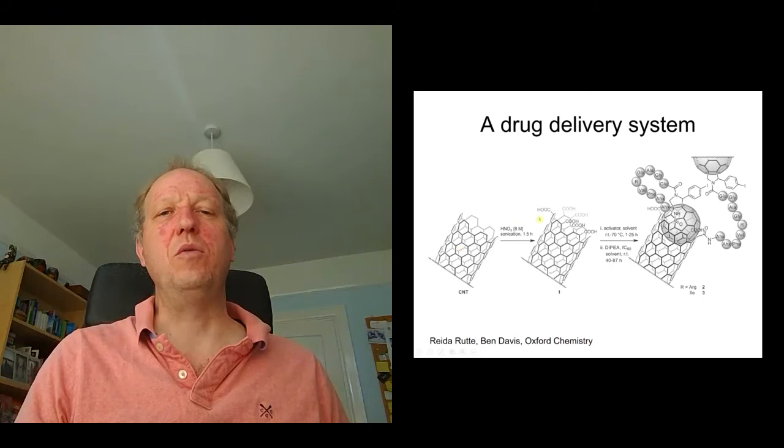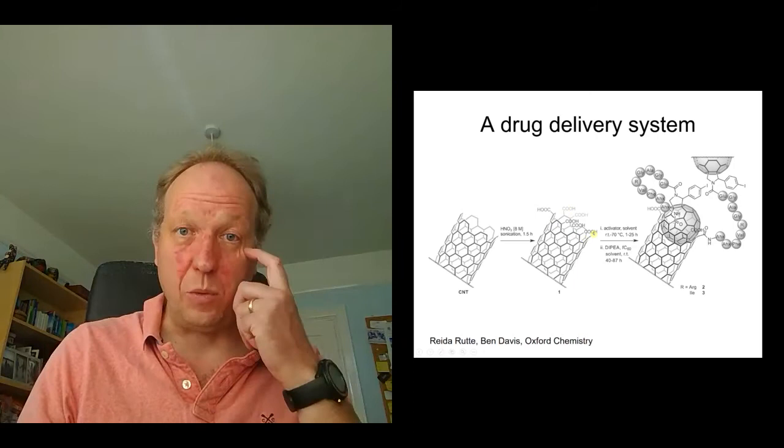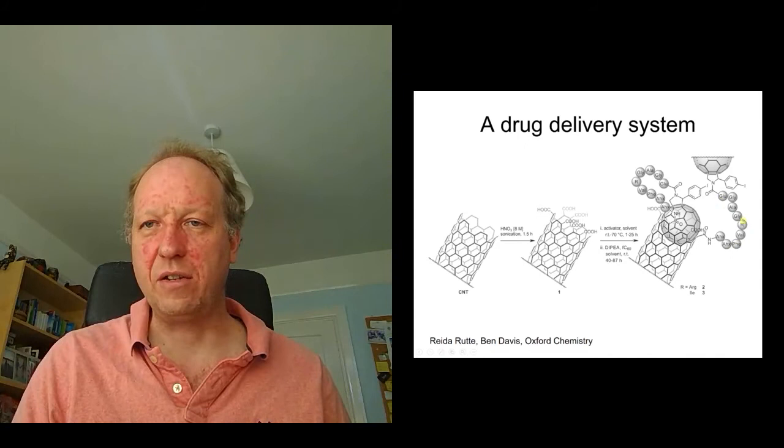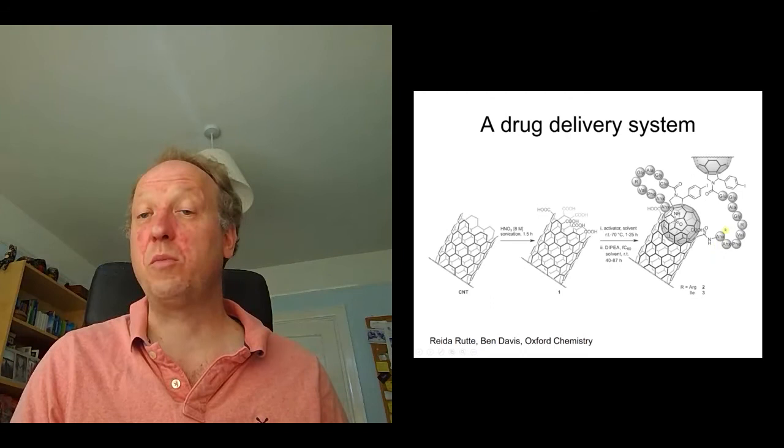Then what you do is what we call functionalise the end of the carbon nanotube. By functionalising, that means we can start to attach other chemical molecules to the end of the carbon nanotube. And the molecule that they attached is actually a peptide chain. And here it is, essentially consisting of these amino acids. And this peptide chain has two configurations. One is with, oh sorry, what I should have said is at the end of the peptide chain is a fullerene, which is another allotrope of carbon buckyball.